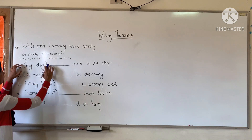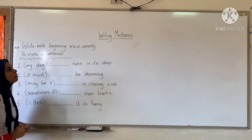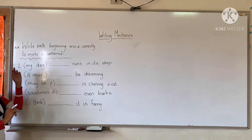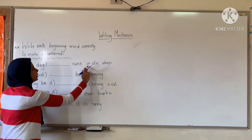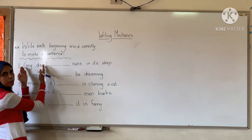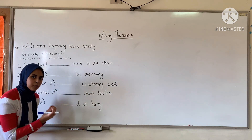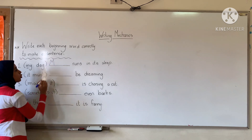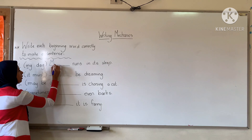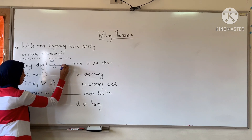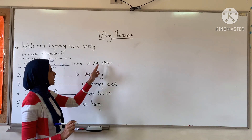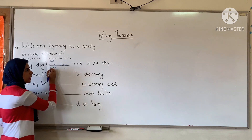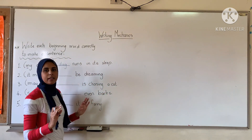So this word 'my dog,' the one between the brackets, you're going to copy it here but correctly — write the beginning in a capital letter. Let's read it: 'My dog runs in its sleep.' We are going to copy 'my dog' on the dash, but correctly. Capital letter — what is the first letter? M. Write it capital M; it should be big. And then the rest of the letters: 'My dog.' The full sentence 'My dog runs in its sleep' makes sense — some words together that you can understand means it's a sentence. You wrote your capital letter, and the book put the full stop for you. It's a very nice and lovely sentence.